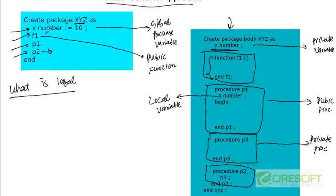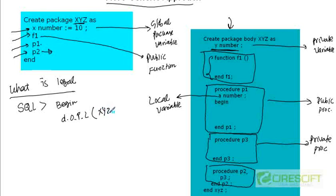You can access the global variable x outside the package. At the SQL prompt, you can write an anonymous block: begin DBMS_OUTPUT.PUT_LINE(xyz.x); end; This anonymous block will print 10 because x is a package-level global variable, so it is accessible outside the package.